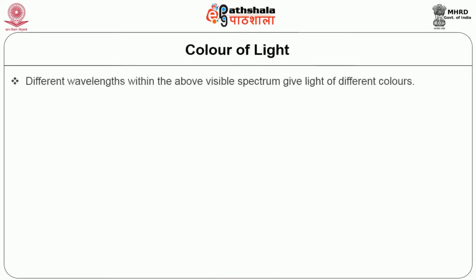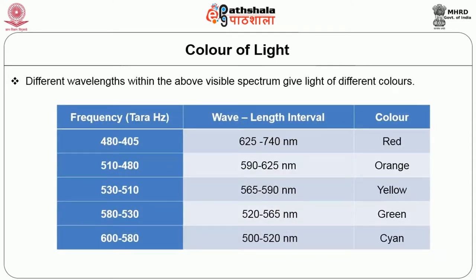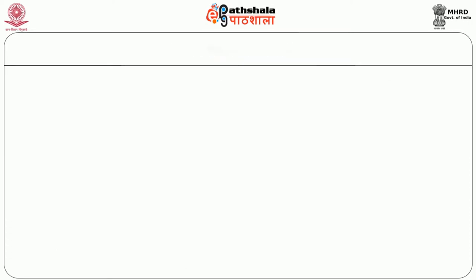Color of light: different wavelengths within the visible spectrum give light of different colors. Frequency 480 to 405 terahertz, wavelength interval 725 to 740 nanometers, gives red color. Similarly, frequency 580 to 530 terahertz, wavelength interval 520 to 565 nanometers, gives green color. Before any quantitative investigation concerning lighting can be carried out, it is necessary to have units in which it can be measured. The most important qualities are the luminous intensity of the light source, the total quantity of light emitted by the source, and the illumination on a given surface.